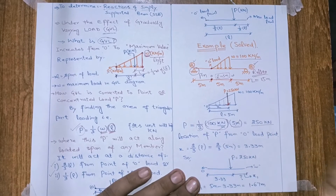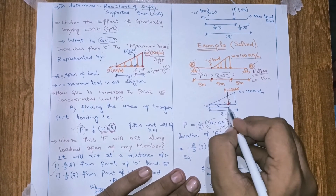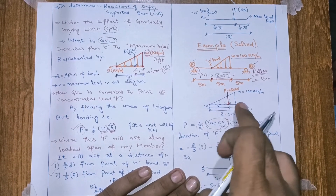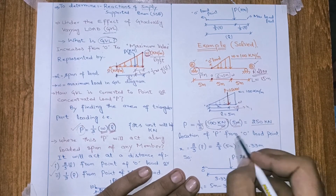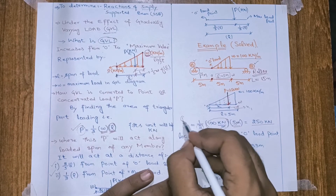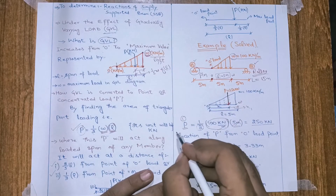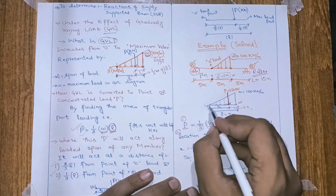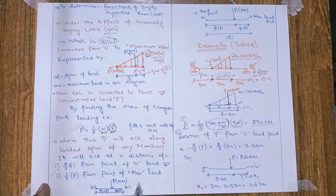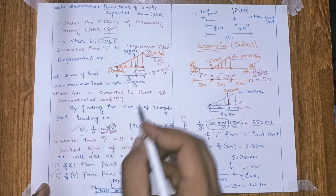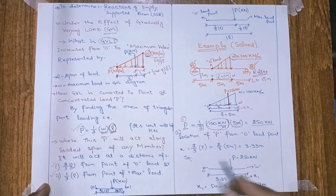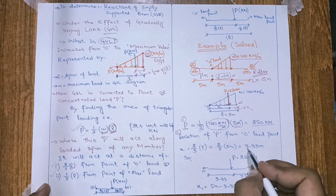What is the point where the load P will act? It will act at a distance x from the zero load point, and at a distance x1 from the maximum load point, or W load point. Our first step was to calculate P from the given w in triangular loading, and the next step is to locate P from the zero load point. From the zero load point, the distance of P is 2/3 of L, where L is the span of the load — from the zero load point to the maximum load point. In this case L is 5 meters, so 2/3 L equals 3.33 meters.